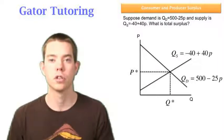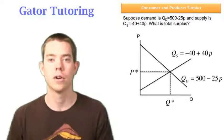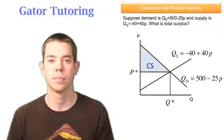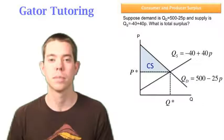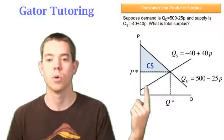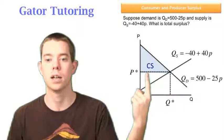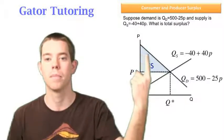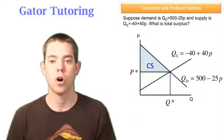We know that consumer surplus is all the area below the demand curve above the price. So that blue triangle is consumer surplus. Think about this: if we're trying to produce this unit right here, well, it only cost us this much to buy, and we value it all the way up there. So that's true all the way until Q star.